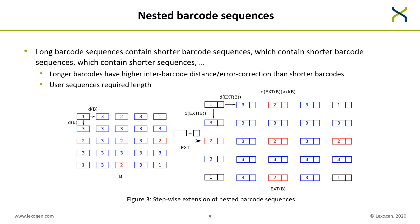We also looked at nested barcode sequences — long barcode sequences containing shorter barcode sequences containing even shorter ones, and so on, where the longer barcodes have higher inter-barcode distance or error correction than shorter barcodes. The user always sequences the length required for the level of cross-contamination they want to achieve. By adding an additional sequence to the barcodes in a set, we get a set with longer barcodes and a higher inter-barcode distance, as shown in the graphic.